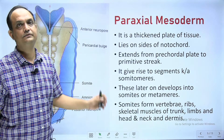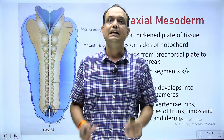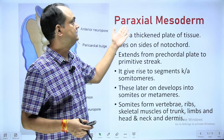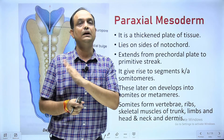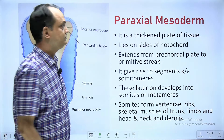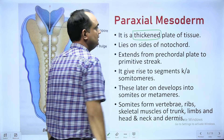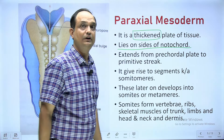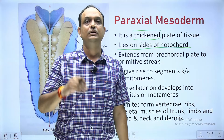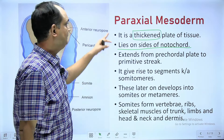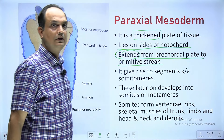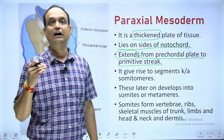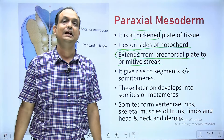Now we discuss the para axial mesoderm. As the name suggests, this mesoderm is found on both sides of the developing notochord — it is parallel to the midline. It is the thickest portion of the intra embryonic mesoderm and lies on both sides of the notochord. The notochord extends from the pre-chordal plate to the primitive streak, so the para axial mesoderm also extends from the pre-chordal plate to the primitive streak region.